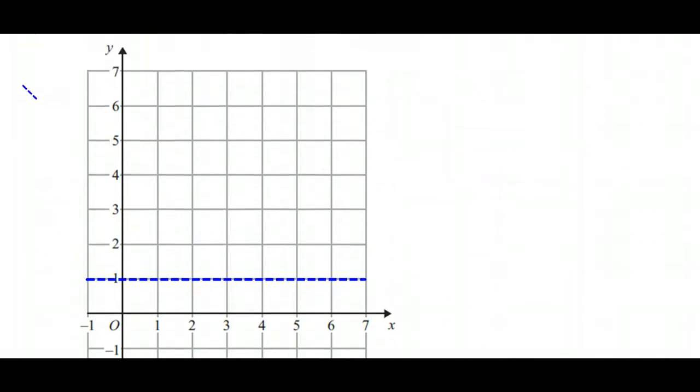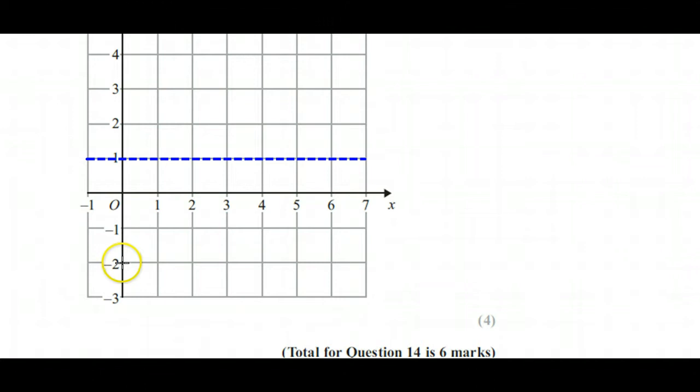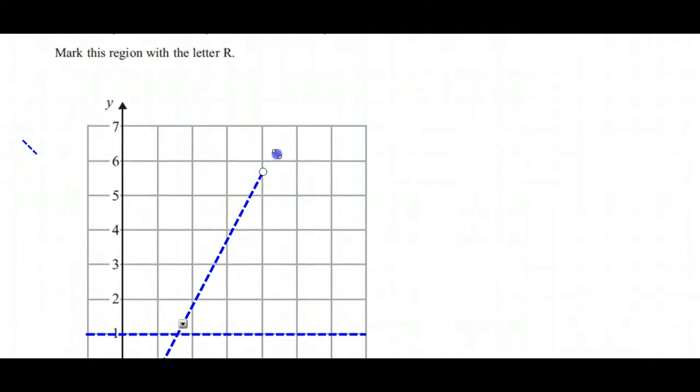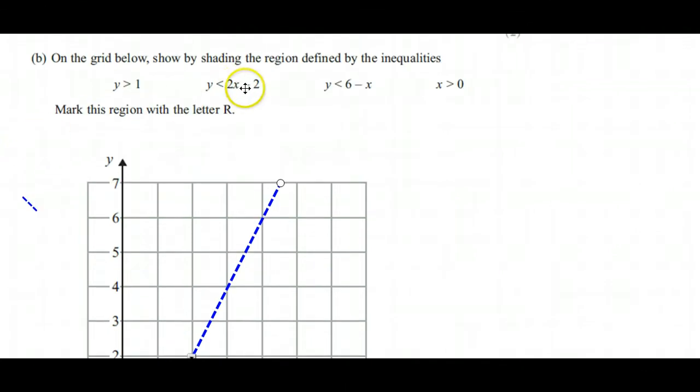For y is less than 2x - 2, well, the y-intercept is -2, and because it's got a gradient of 2, it goes across 1, up 2, across 1, up 2, and we'll continue on that gradient in both directions. So I can extend that slightly more in both directions, and there we've got our line representing y ≤ 2x - 2.